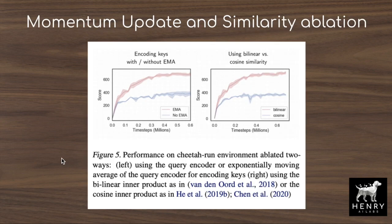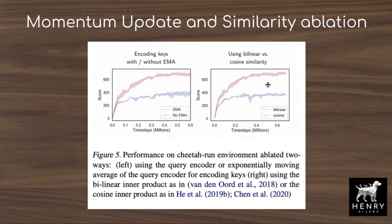An ablation shows that even subtle ideas like the momentum update — versus no momentum update — in the momentum contrastive learning framework have a massive performance difference. Additionally, the bilinear projection using learnable weight matrix W to transform queries and keys for comparison has a huge gain over just using cosine similarity between query and key representation vectors.